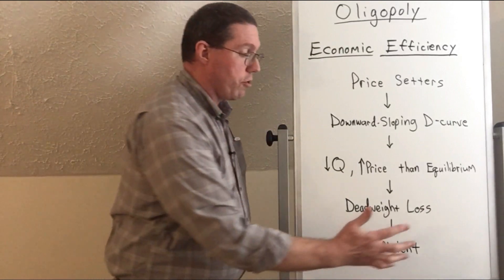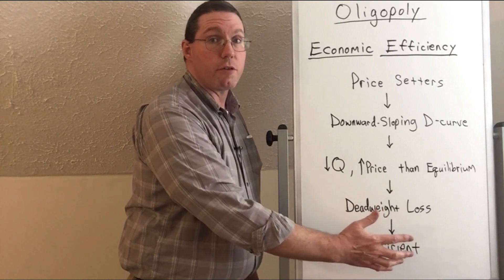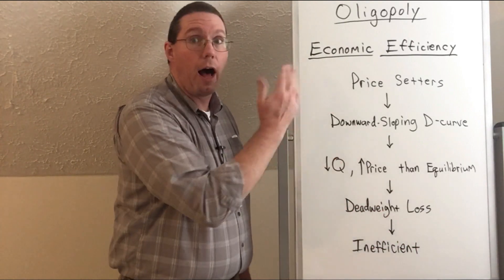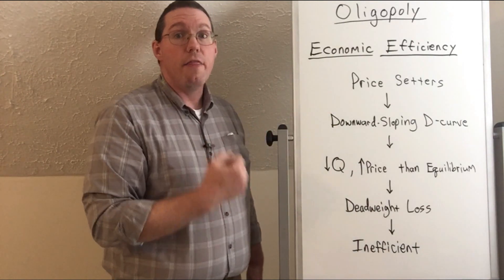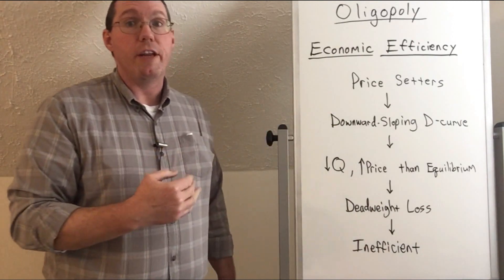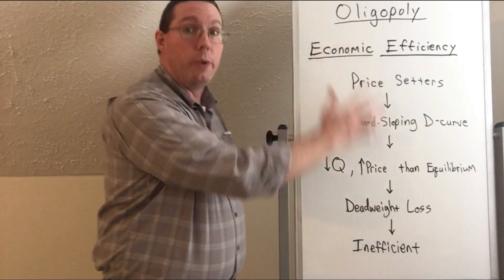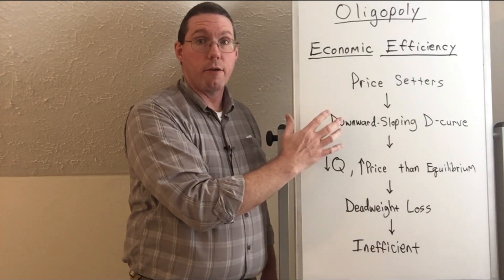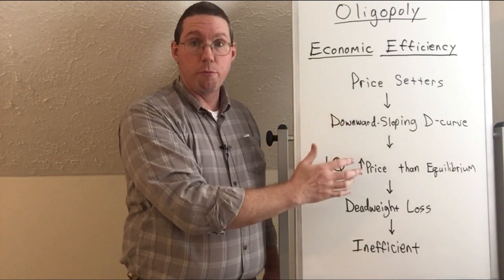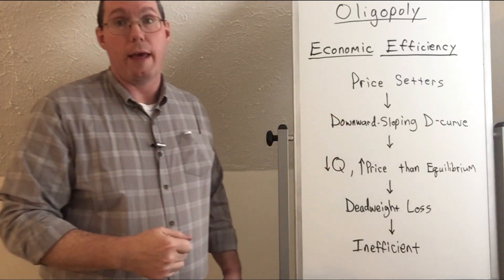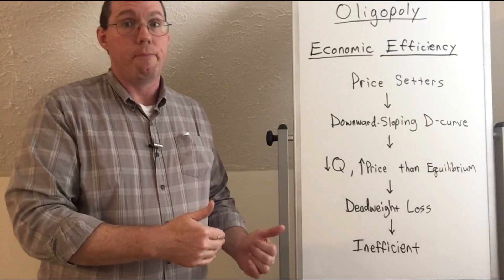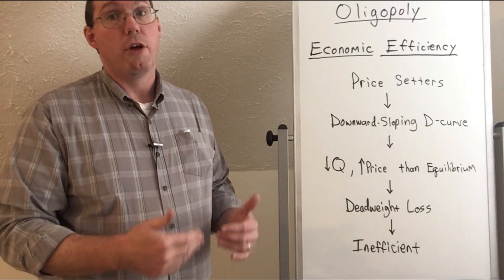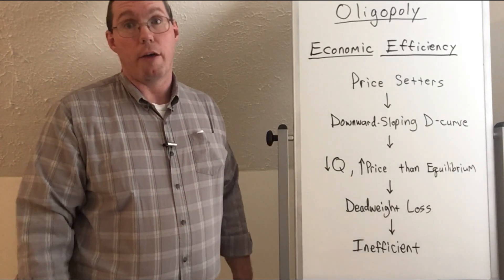Understand that this inefficiency is for society — it's inefficient for society's use of its resources. But it's not inefficient for the oligopoly firms themselves; they are benefiting greatly by doing this. They are gaining producer surplus at the expense of consumer surplus and deadweight loss. So consumer surplus goes down, producer surplus goes up, and deadweight loss goes up.